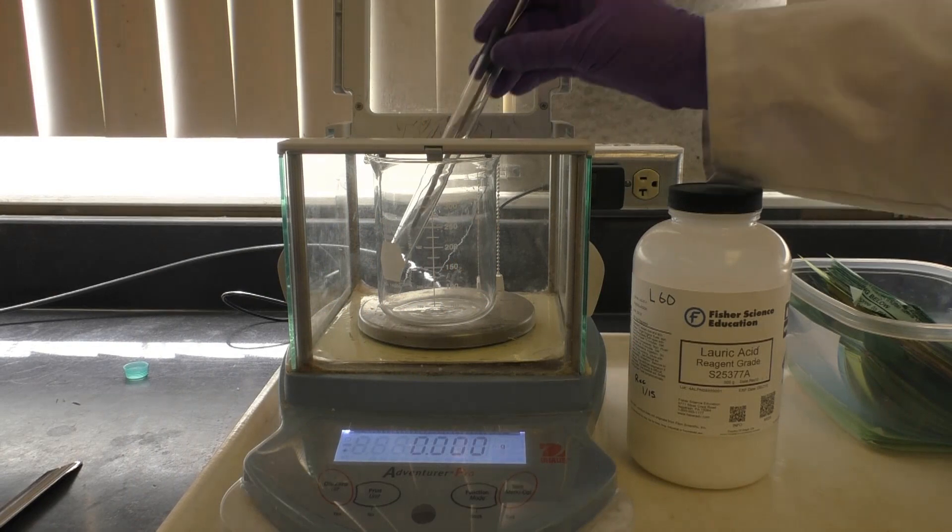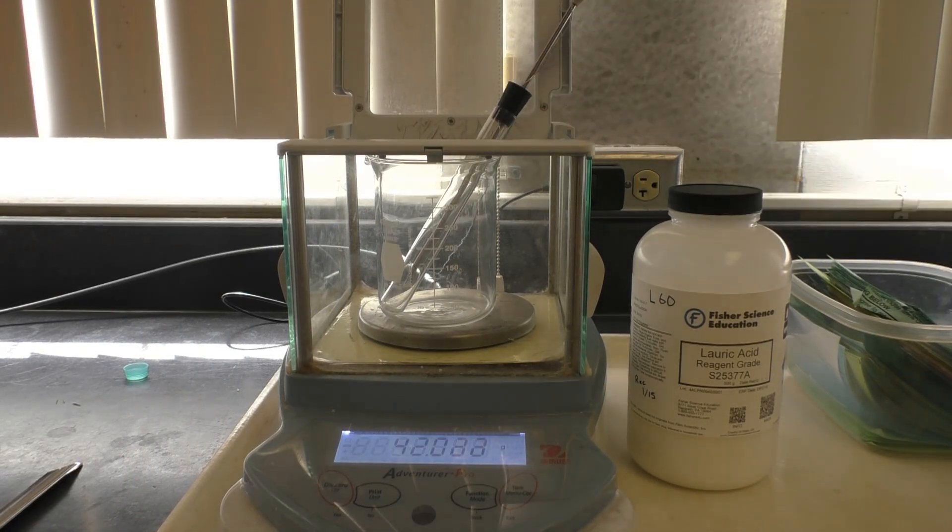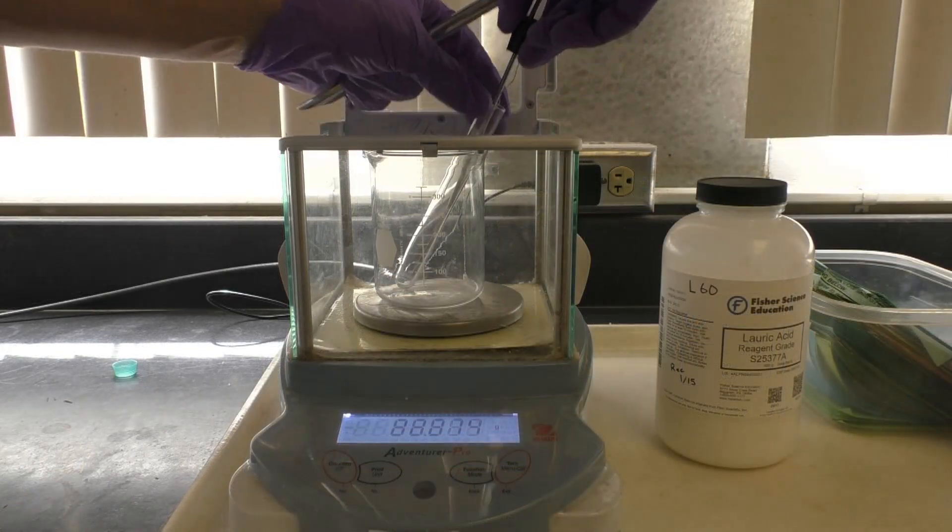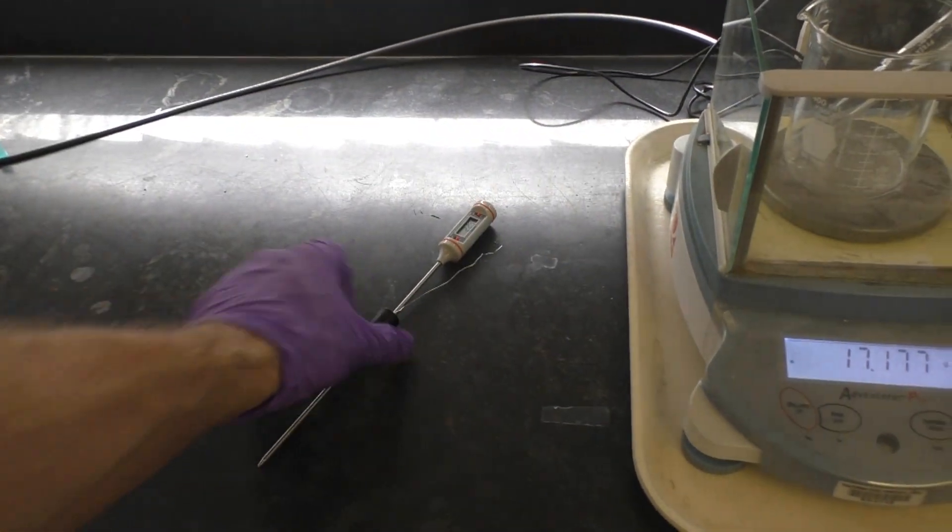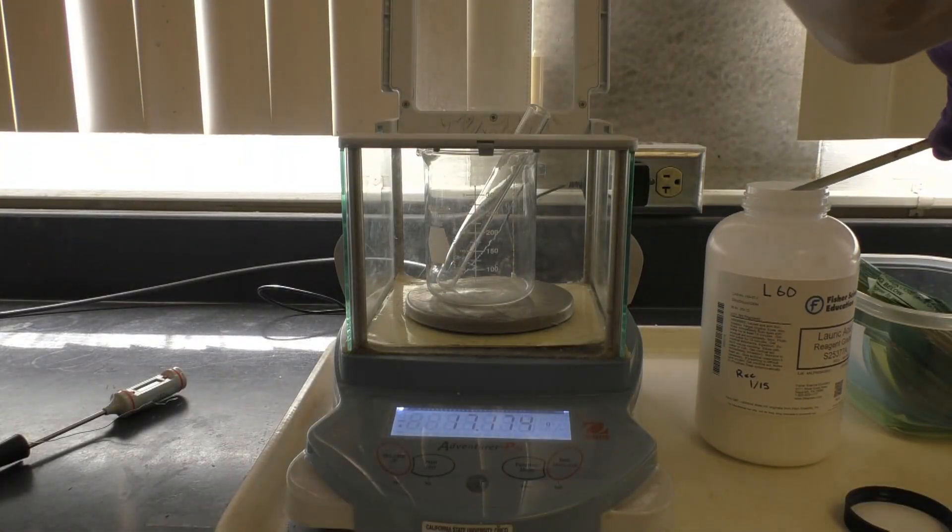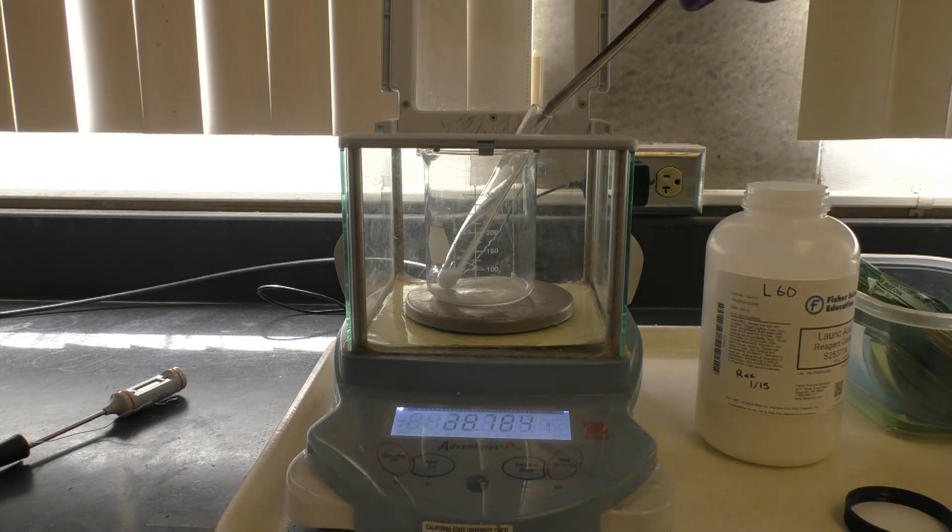First, you need to obtain an initial weight of your melting point apparatus. You can keep it upright by use of a tared beaker on the scale. Now just add about 5 grams of lauric acid to your apparatus and get a final weight. Again, just keep the apparatus upright on the scale by use of the beaker.